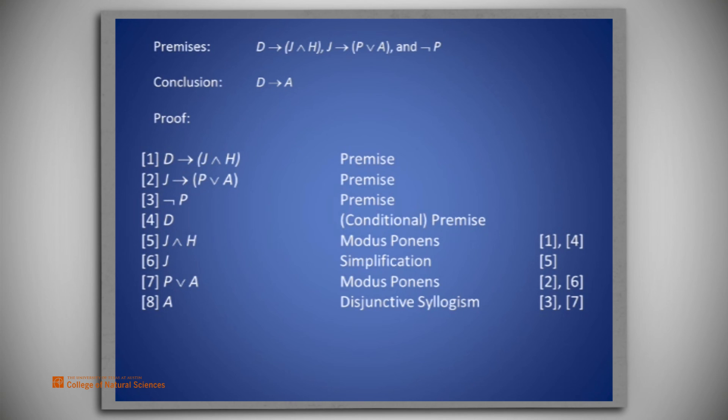We obtained the statement A on line 8, having added the extra premise D on line 4. Now it is time to remove that as a temporary premise, and to do that, we obtain D implies A, which is on line 9. This is called discharging of the conditionalization.